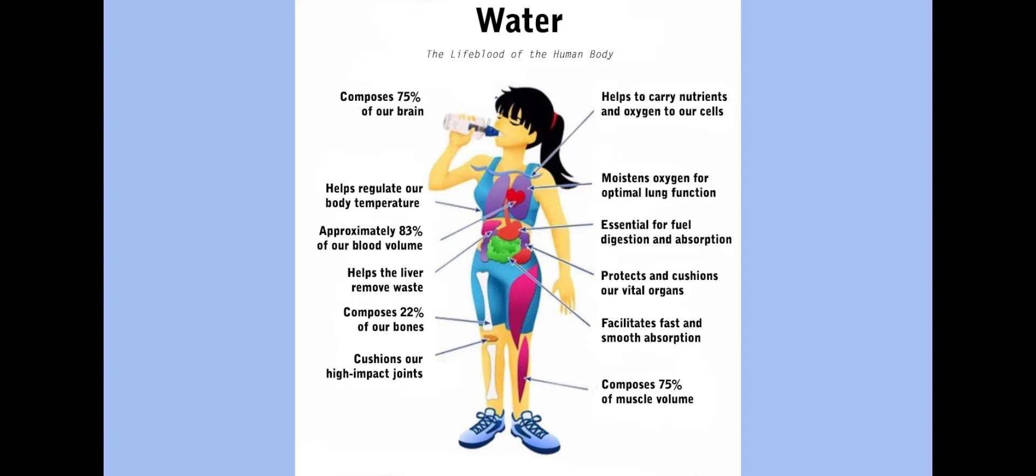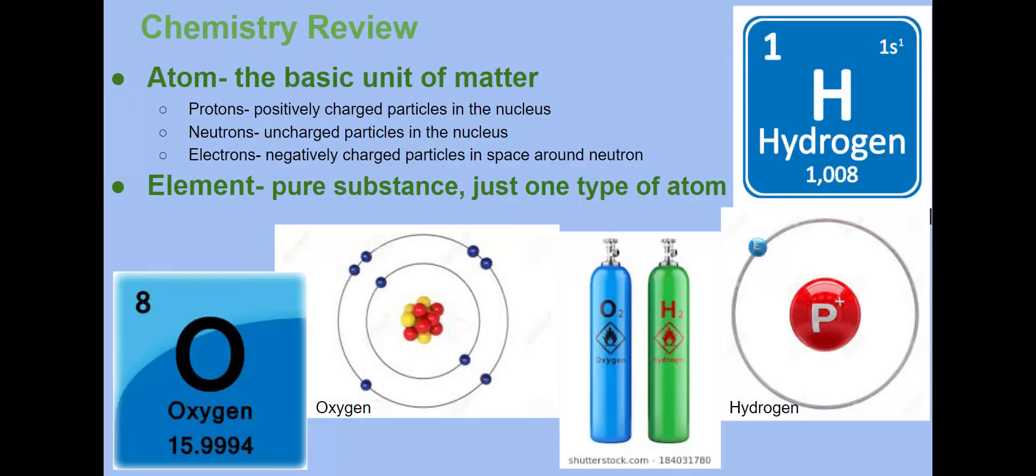Let's review some of the basic chemistry before we continue to talk about water. Atoms are the basic unit of matter. They're made up of three parts: protons which are positive, neutrons which are neutral, and electrons which are negatively charged. An element is just all of the atoms of one type put together, a pure substance made up of one type. Here you can see an example of a hydrogen atom and here an oxygen atom. Atoms are the basic unit of matter and elements are made up of atoms.